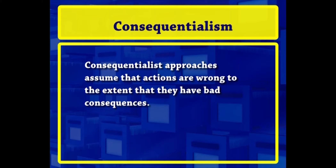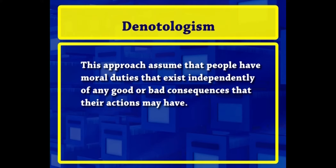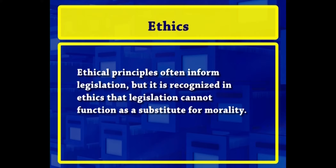Consequentialist approaches assume that actions are wrong to the extent that they have bad consequences. Whereas deontological approaches assume that people have moral duties that exist independently of any good or bad consequences that their actions may have. Ethical principles often inform legislation, but it is recognized in ethics that legislation cannot function as a substitute for morality. It is for this reason that individuals and corporations are always required to consider not only the legality but also the morality of their actions.